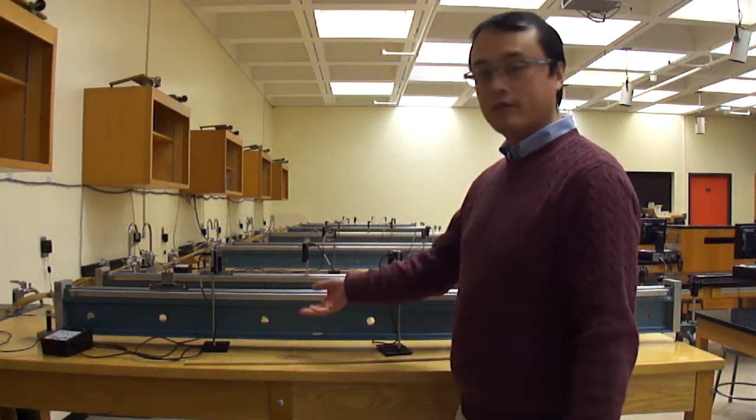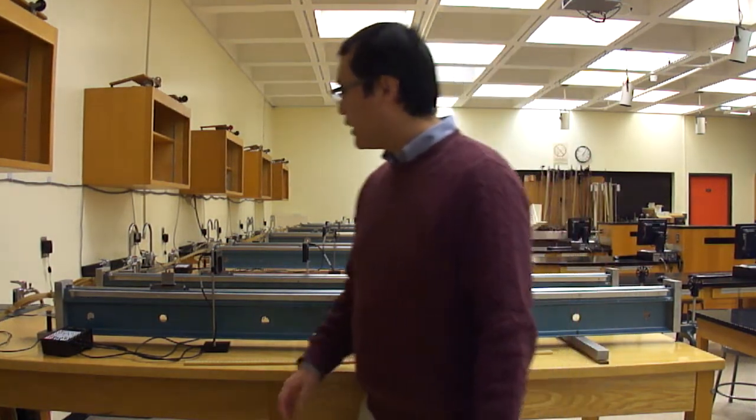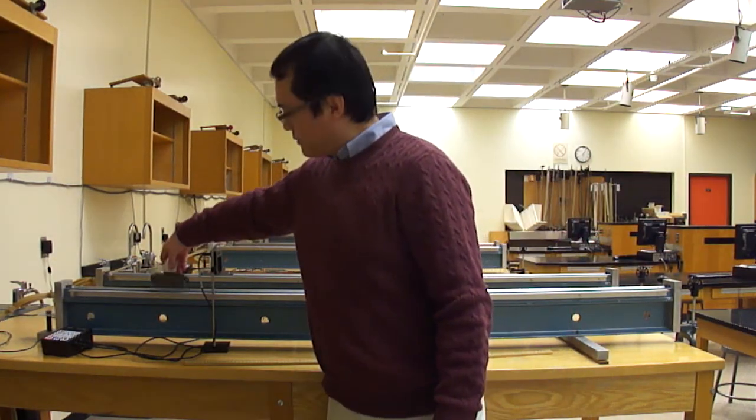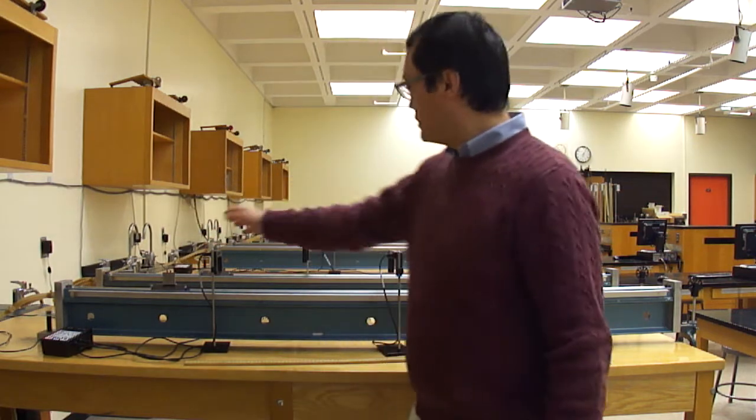So here's our system. We have an air track, a glider, and two foil gates.